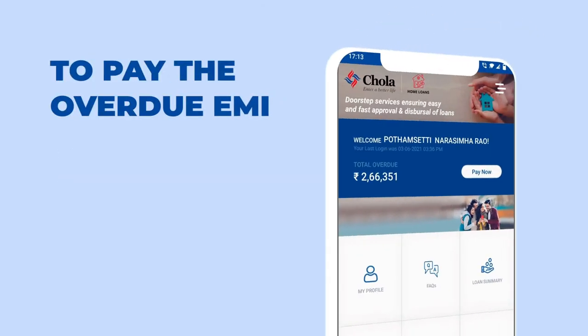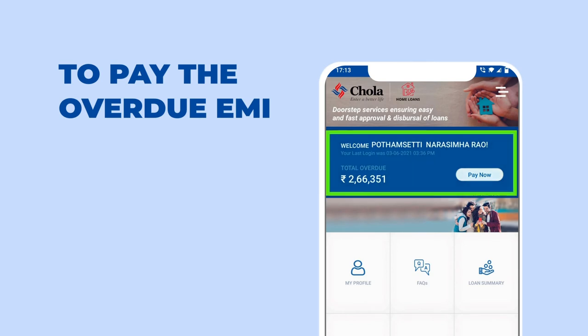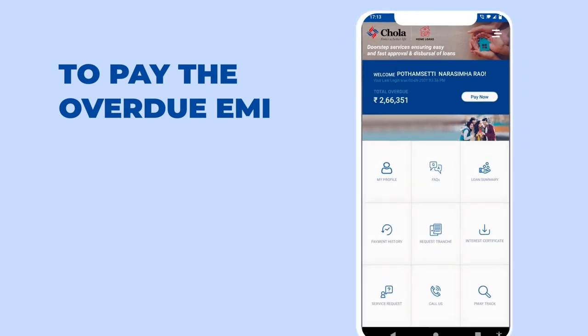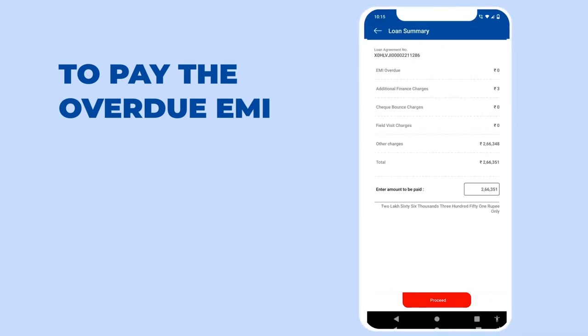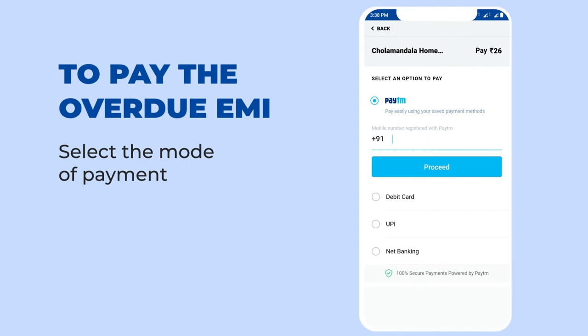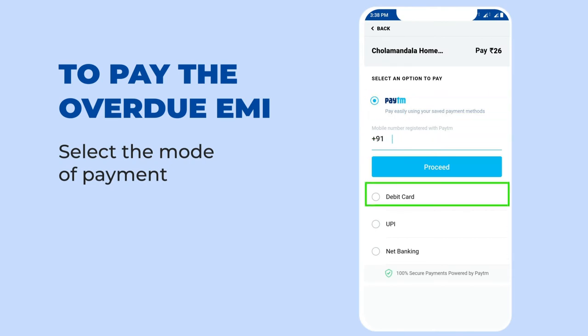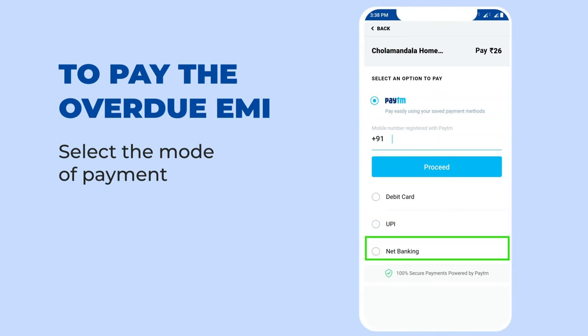To pay the overdue EMI, click on the Pay Now option. Select the mode of payment. You can choose between Paytm, Debit Card, UPI, Net Banking and complete the payment.